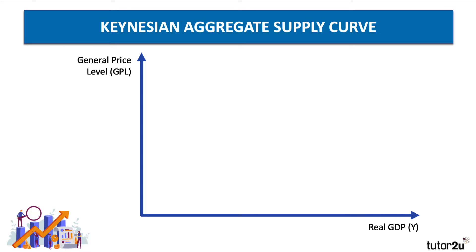So here we go. Let's have a look at how we draw the curve. Crucially, a significant minority of students tend to use incorrect labelling on their diagrams, so please remember to label your ADAS diagrams with the general price level, or GPL, on the y-axis, rather than simply price as in micro, and with real GDP, or real national output, on the x-axis, rather than just simply quantity as in micro. We tend to use the letter Y for income as our shorthand label on the x-axis, rather than quantity.